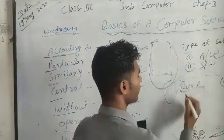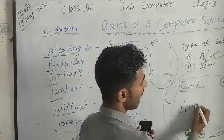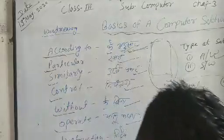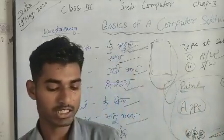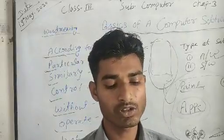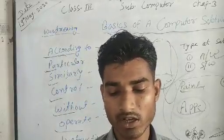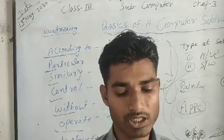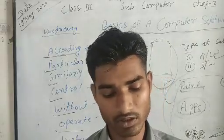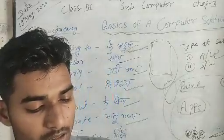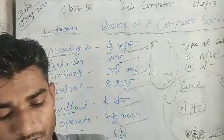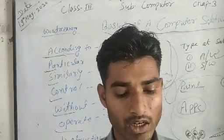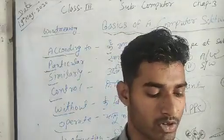System software controls and manages the overall set of activities of the computer system. System software runs the application software. The operating system is an example of system software. Without system software, a computer cannot work. Windows 7 is an example of system software.